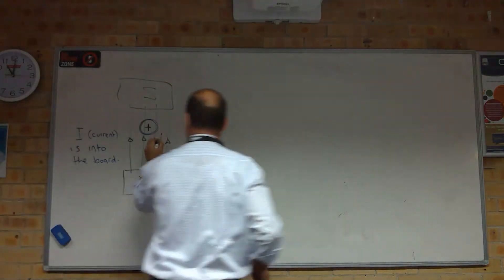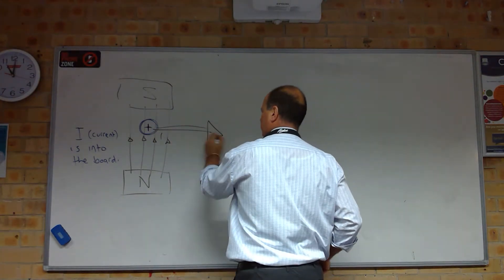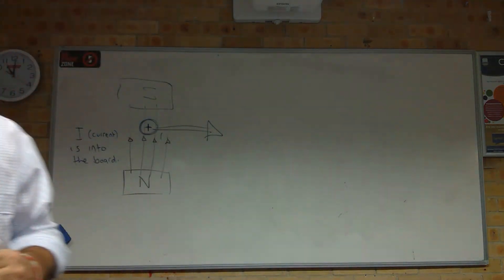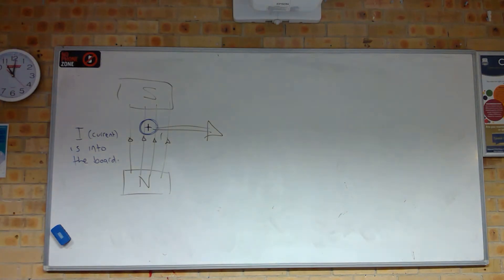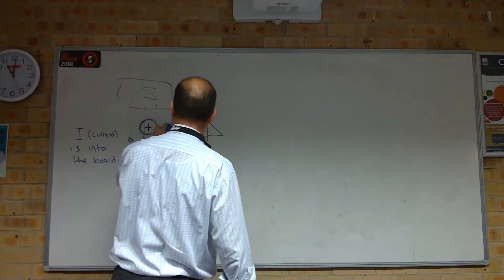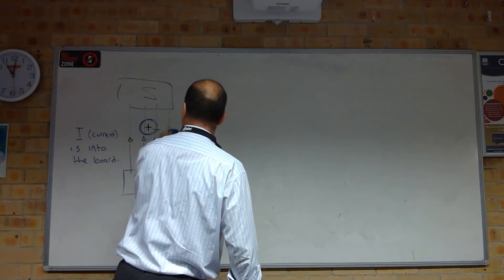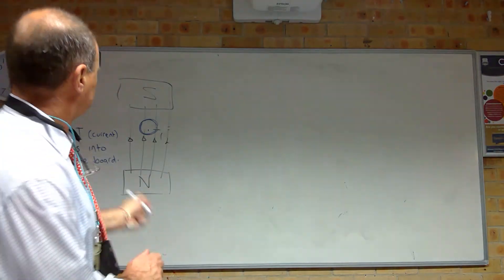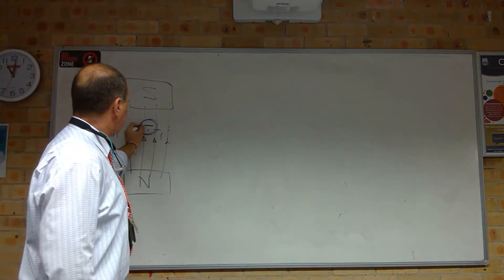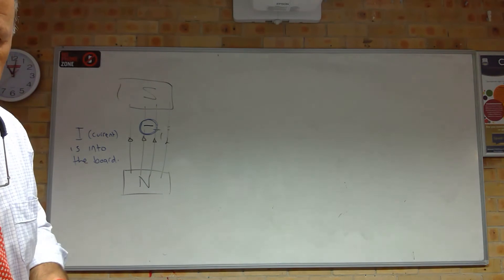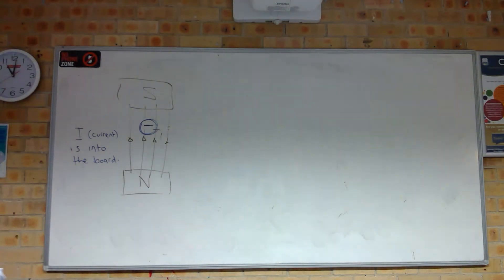That way — conductor moving in that direction. Now I want you to work out what happens if, instead of having the current going into the board, we have our current coming out of the board. So this end of the conductor would be negative and the other end would be positive. Pause the video.